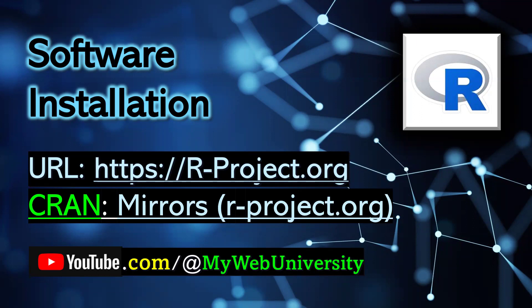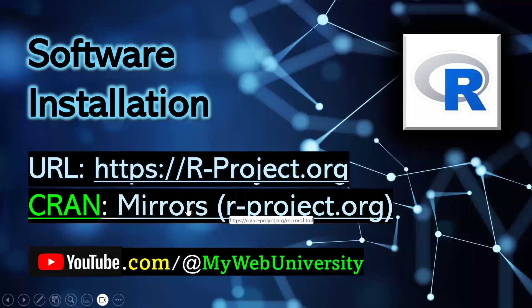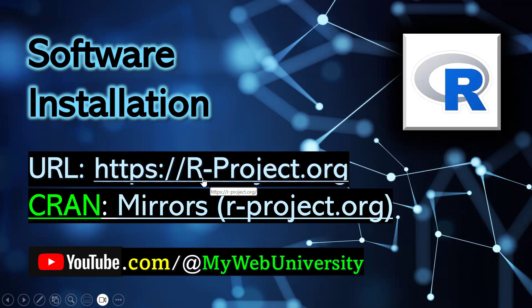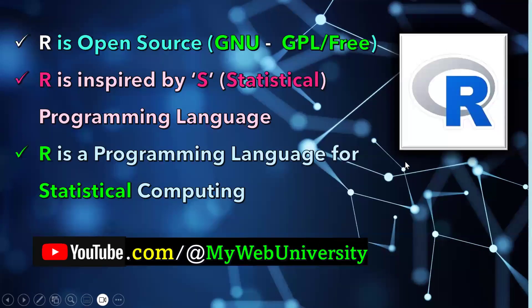I'm going to cover the software installation. In order to install R programming language you have to visit the URL HTTPS — r-project.org — which is a secure page with an SSL certificate installed. The mirror of that is CRAN, which stands for Comprehensive R Archive Network. You can download R for Windows, Linux, or Mac OS X from r-project.org.